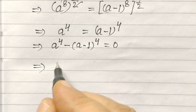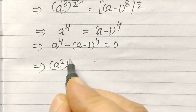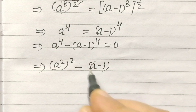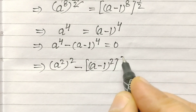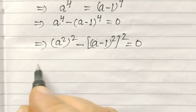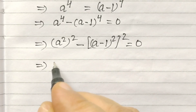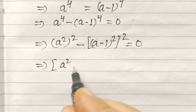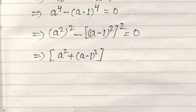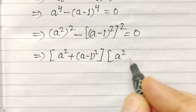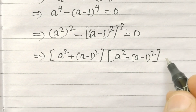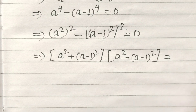Now we write this as (A²)² minus ((A−1)²)² equals 0. We can transform this expression as (A² + (A−1)²) times (A² − (A−1)²) equals 0, using the identity A² minus B² equals (A+B)(A−B).